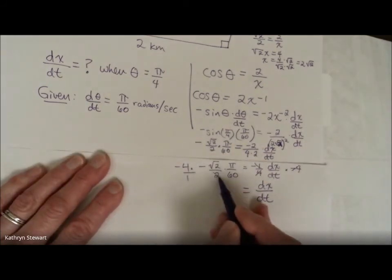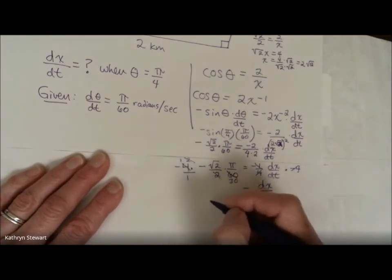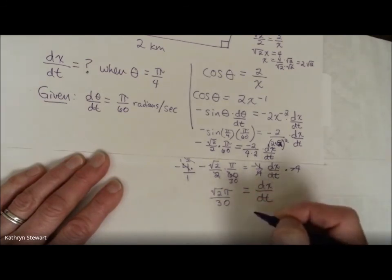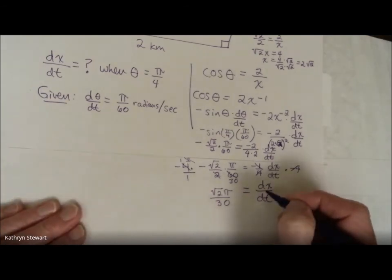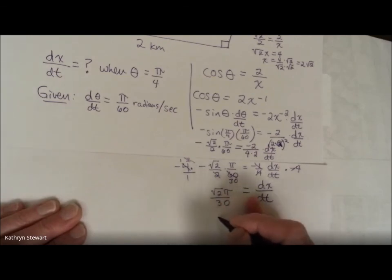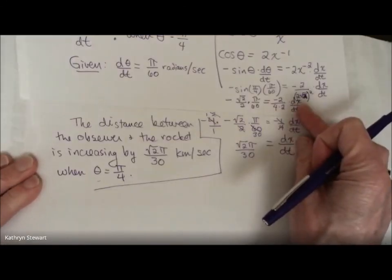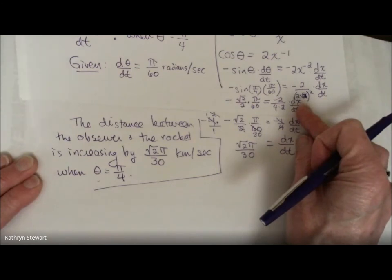I'm just simplifying there, and I'm going to multiply both sides by negative 4. Okay, so let's see. I have negative 4 divided by 2. That's negative 2. Negative 2 into 60. It's negative 1 over 30. So I think I have a negative times a negative. So I have square root of 2 times pi divided by 30. And let's put units in. Since I'm done, x is being measured in kilometers, so this would be kilometers per second. So my answer is the distance between the observer and the rocket is increasing by square root of 2 times pi over 30 kilometers per second at the moment when theta is pi over 4.